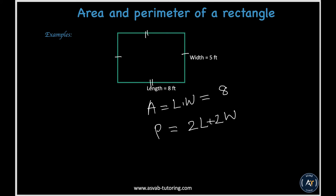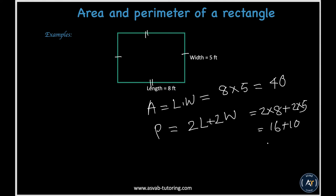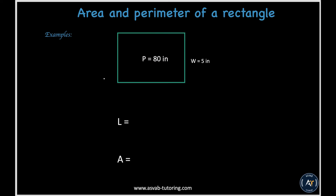If you plug in the values, you get 8 times 5 equal to 40 — that is the area. For the perimeter, you get 2 times 8 plus 2 times 5, which gives you 16 plus 10 equal to 26. That's how to find area and perimeter of a rectangle.